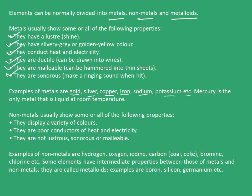Mercury is the only metal that is liquid at room temperature. Non-metals usually show some or all of these properties: they display a variety of colors; they are poor conductors of heat and electricity; and they are not lustrous, sonorous, or malleable. Examples of non-metals are hydrogen, oxygen, iodine, carbon, bromine, chlorine, etc. Some elements have intermediate properties between those of metals and non-metals and these are called metalloids. Examples of metalloids are boron, silicon, germanium, etc.